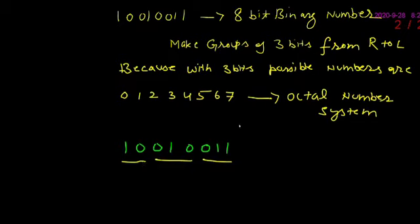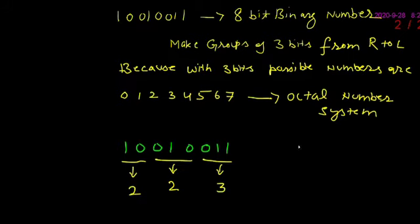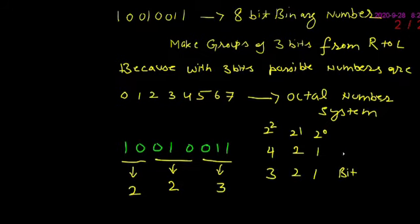इस example में last group में हमारे पास सिर्फ 2-bits हैं. तो हम इनके equivalent decimal number लिखेंगे. First group की decimal में value आएगी 3, then second group 2, and last group again 2. इसके लिए आप shortcut method use कर सकते हैं; उसके लिए आप video check कर सकते हैं — how to convert binary into decimal number. Bit 1 की place value 1 होती है, bit 2 की place value 2, bit 3 की place value 4.